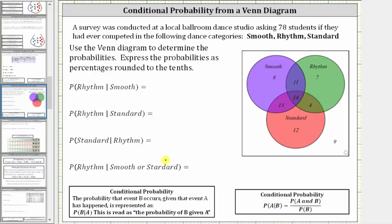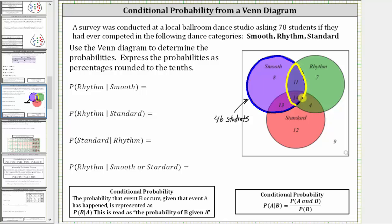We're first asked to find the probability a student competed in rhythm, given they competed in smooth. Since we are given they competed in smooth, we are only concerned about the students in the smooth set, which is this set here. The number of students that competed in smooth is equal to 8 plus 11 plus 14 plus 13, and the subset that competed in rhythm would be in this subset here.